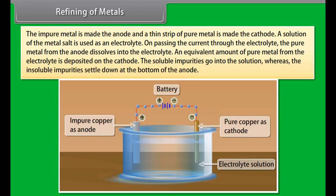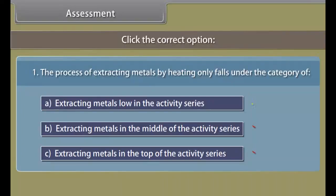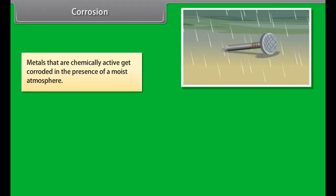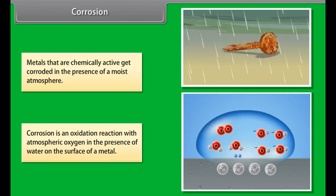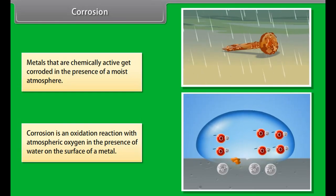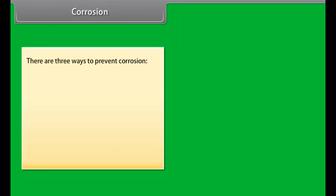Refining of metals. The metals produced by reduction processes are not pure. They still contain impurities which must be removed to obtain pure metals. The most widely used method for refining impure metals is electrolytic refining. Many metals are refined electrolytically. The impure metal is made the anode and a thin strip of pure metal is made the cathode. A solution of the metal salt is used as an electrolyte. On passing the current through the electrolyte, the pure metal from the anode dissolves into the electrolyte. An equivalent amount of pure metal from the electrolyte is deposited on the cathode. The soluble impurities go into the solution whereas the insoluble impurities settle down at the bottom of the anode. These are known as anode mud.